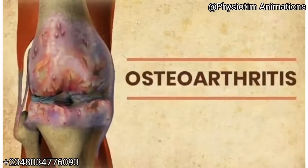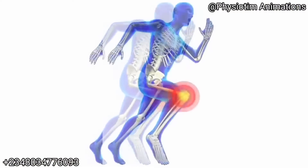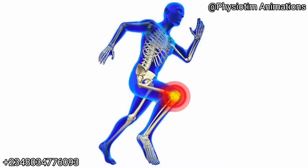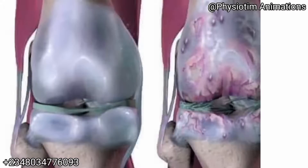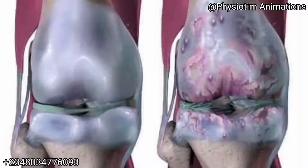Knee Osteoarthritis, OA, also known as degenerative joint disease, is typically the result of wear and tear and progressive loss of articular cartilage. Osteoarthritis is the most common disease of the joints worldwide, with the knee being the most commonly affected joint in the body. It mainly affects people over the age of 45.